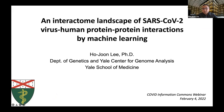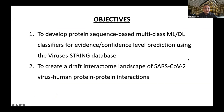There are two objectives. The first is to develop protein sequence-based multi-class machine learning or deep learning classifiers for evidence or confidence level prediction using the VirusSTRING database. The second is to use those classifiers to create a draft interactome landscape of SARS-CoV-2 virus-human protein-protein interactions.